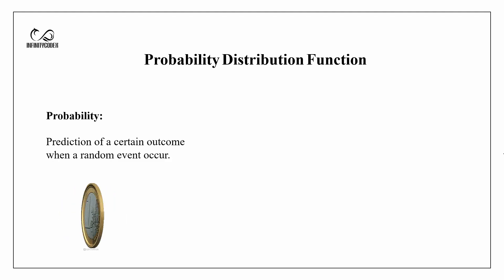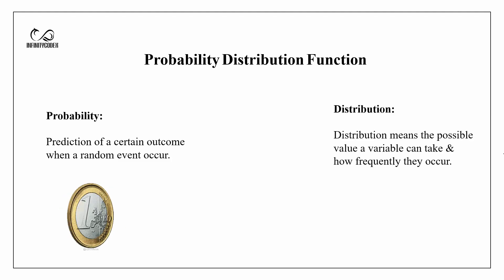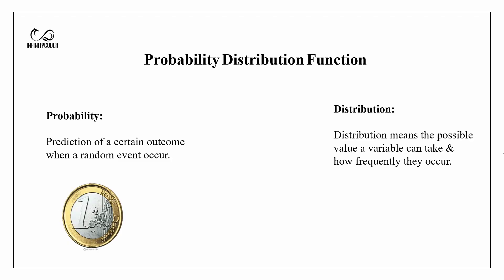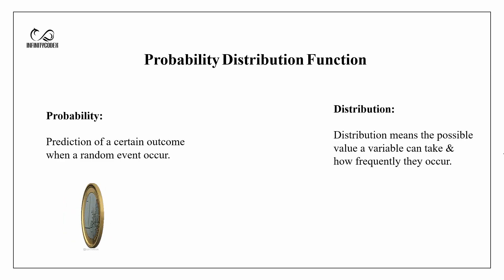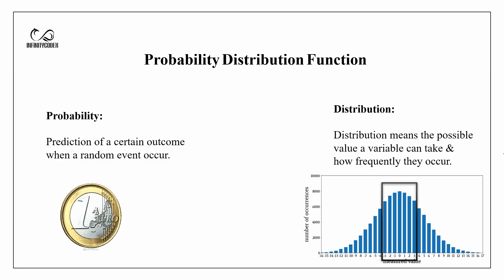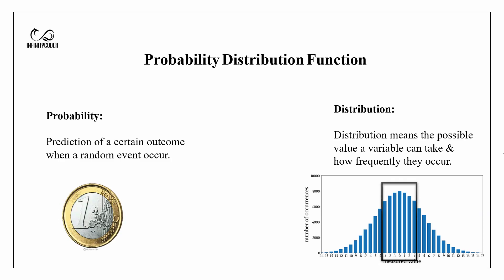Now what do we mean by distribution? Distribution means the possible values a variable can take and how frequently they occur. For example, in a normally distributed data, most of the data points will lie towards the mean of the distribution.